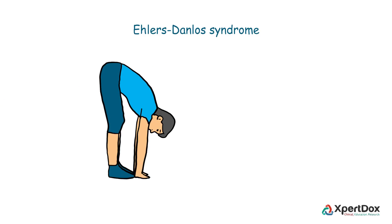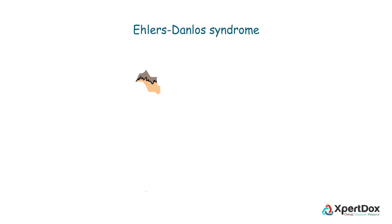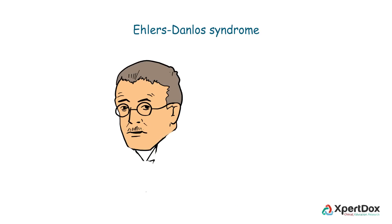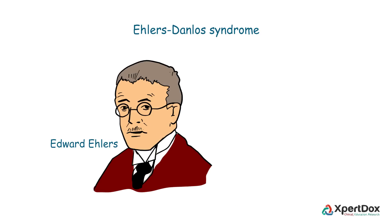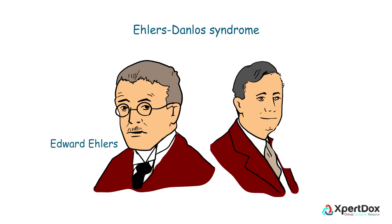Excessive joint mobility is the hallmark of the disease. The name of the syndrome comes from the names of a Danish dermatologist, Edward Ehlers, and a French dermatologist, Henri Danlos, who described it in the first decade of the 20th century.